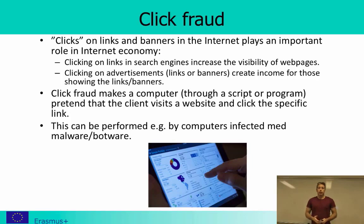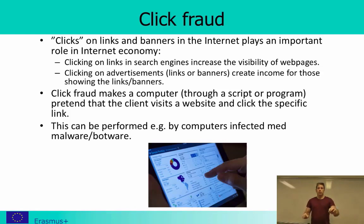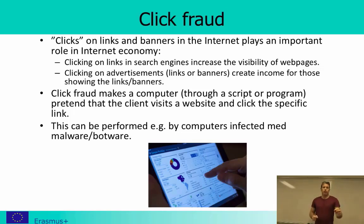If I search for a particular word, let's say 'paper,' and then click on a specific link in Google, Google learns that for that search term this link was a good choice. If many people click on a specific link for a specific search word, that word will increase its visibility in Google — it will rank higher and higher.